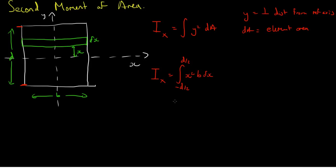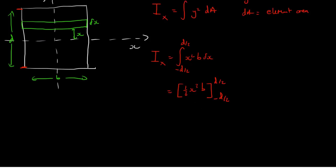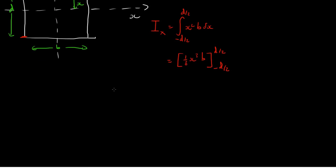Now if we take and evaluate this integral, we end up with 1 third x cubed b between minus d over 2 and d over 2. And we evaluate with the limits. x is equal to 1 third times x cubed, so that's d cubed over half cubed, which is 8, and that's times by b.